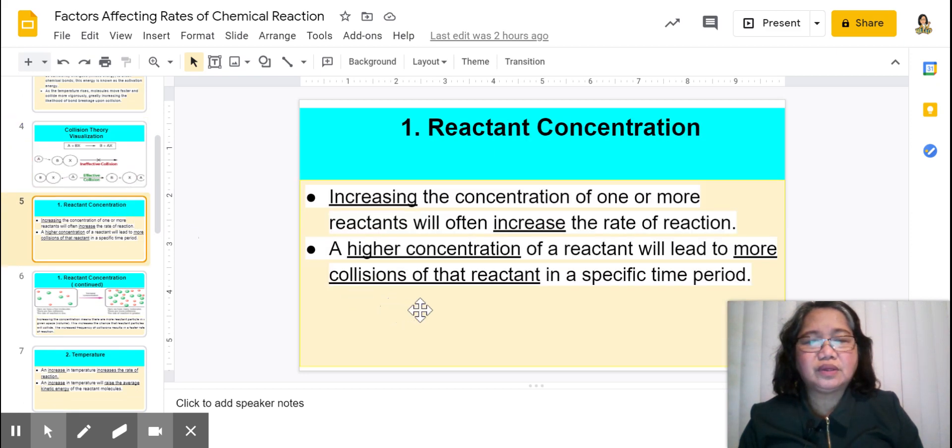Okay, so what are the factors that affect the rate of a chemical reaction? The first one is reactant concentration. Increasing the concentration of one or more reactants will increase the rate of the reaction. So a higher concentration of a reactant will lead to more collisions.